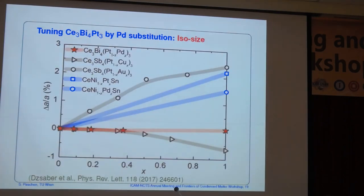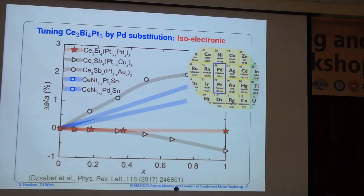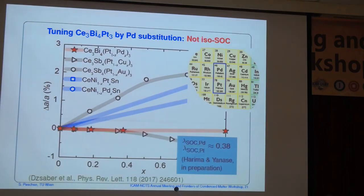Interestingly, this is an isosize substitution series — going from full platinum to full palladium, the lattice parameter does not change at all. This is just a comparison with other typical substitution series showing either an increase or decrease, but here essentially nothing is happening. So we don't have chemical pressure in this substitution series. It is also an isoelectronic substitution, so we don't expect doping effects. But since palladium and platinum have very different masses, we expect a sizable difference in spin-orbit coupling, and there is an estimate of how different it should be. So this substitution series could be a spin-orbit coupling tuning.